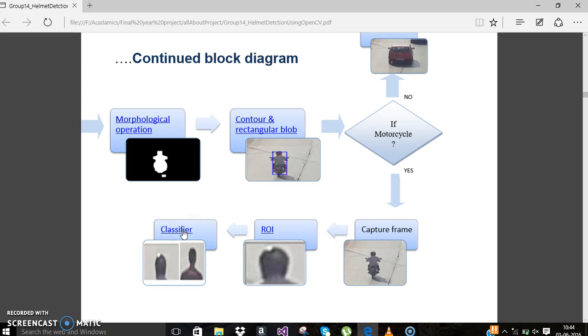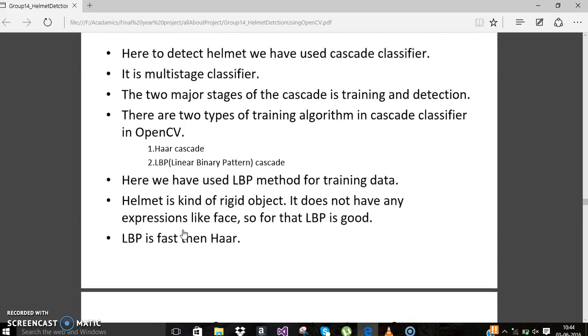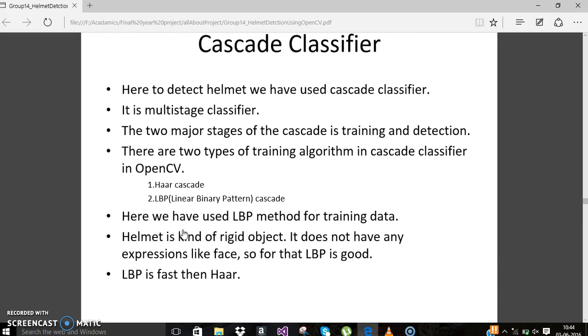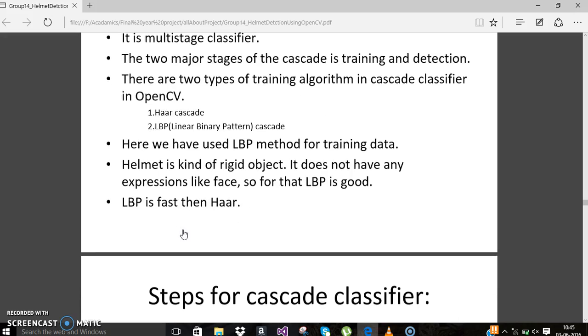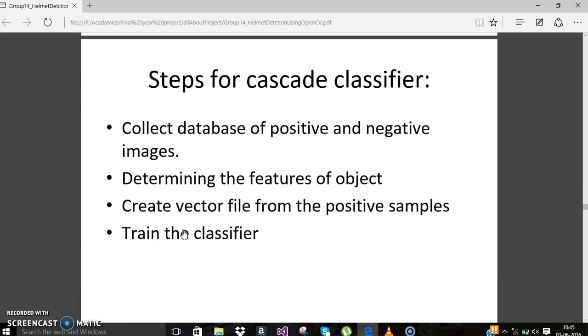After that, we need to classify whether the rider has a helmet or not. For that, we have used a cascade classifier. It is a multi-stage classifier. It has two algorithms for classifying: Haar and LBP. We have used LBP because it takes low time to get trained.